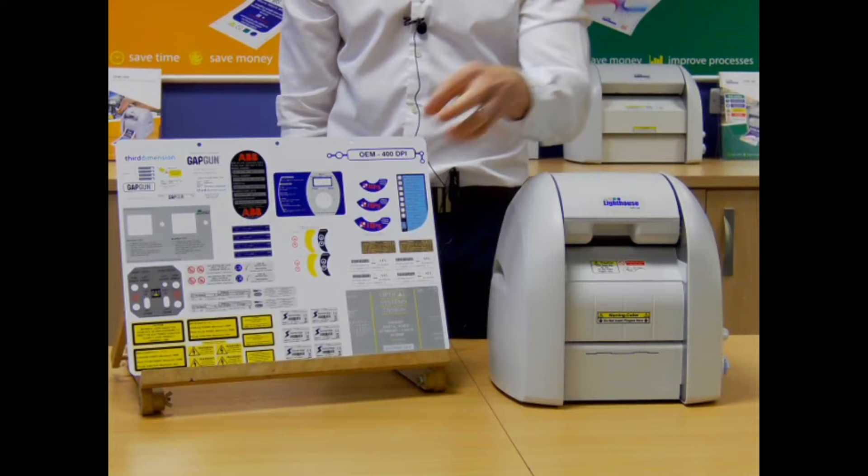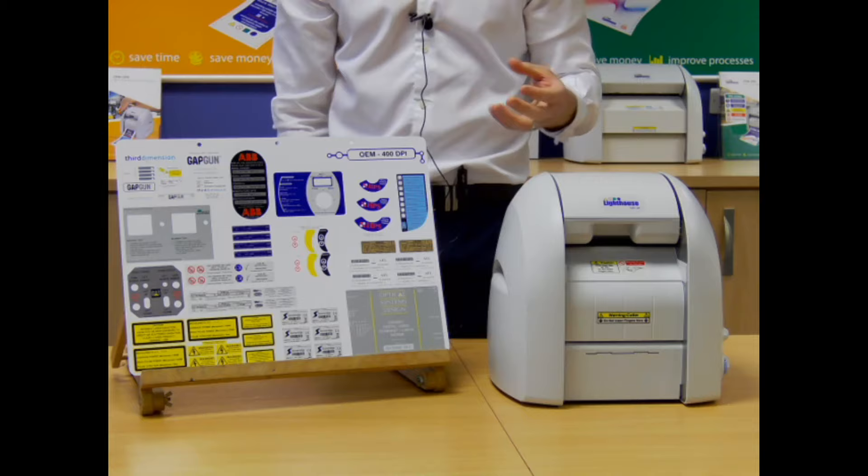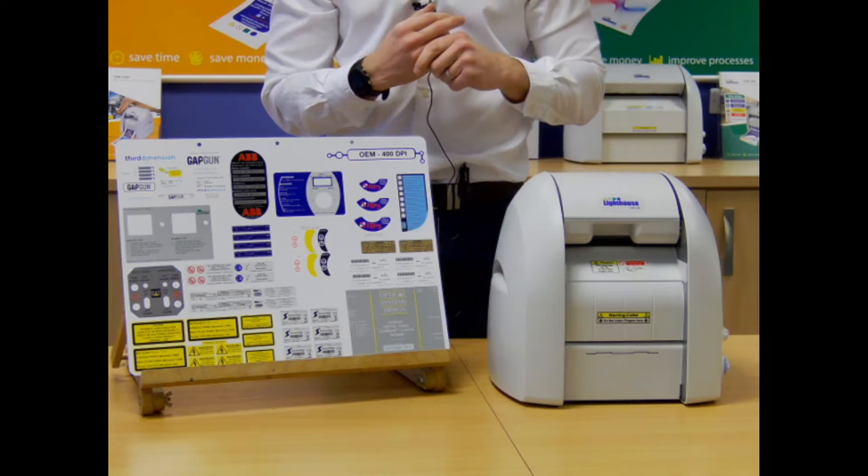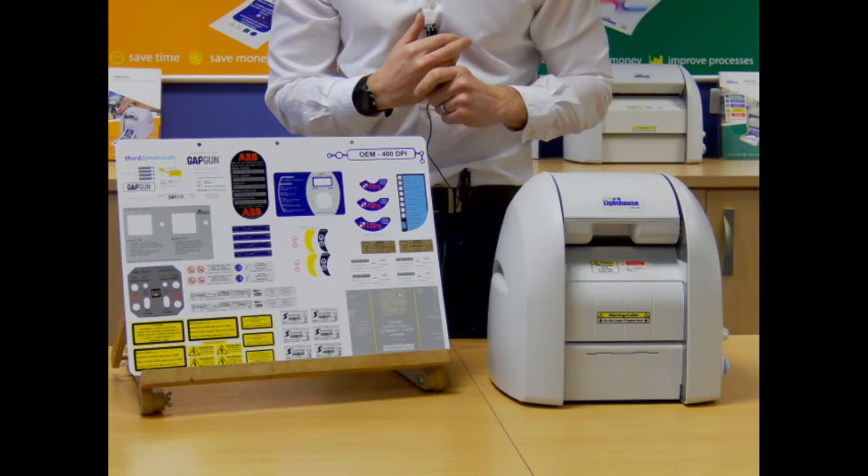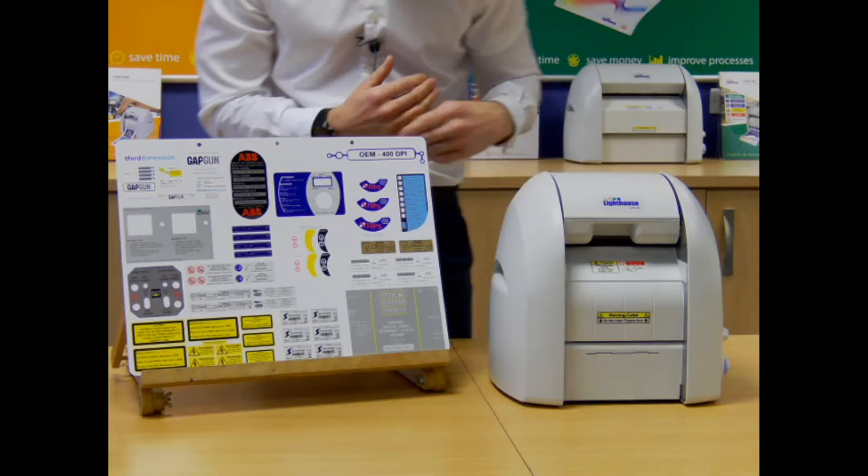A range of different materials on here. For the high-definition printer, most of our customers will probably use something like polyester. Higher temperature range than vinyl. Also we supply materials like polyamide. Things like PCB board marking, high temperature, goes up to over 500 degrees. Versatile sort of materials, depending on what your requirement is.